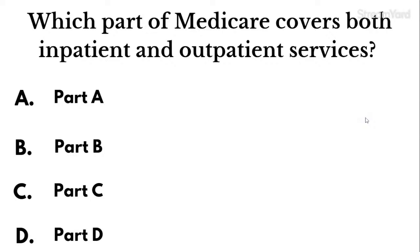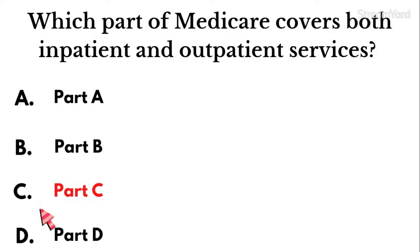Question twenty-two: Which part of Medicare covers both inpatient and outpatient services? Part A, B, C, or D? The correct answer is Part C, also known as Medicare Advantage. Part A covers inpatient, Part B covers outpatient, Part C covers both — Medicare Advantage. Part D covers prescriptions — when you think of D, think of drugs. You need to know those parts of Medicare.